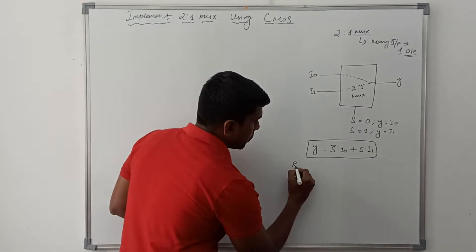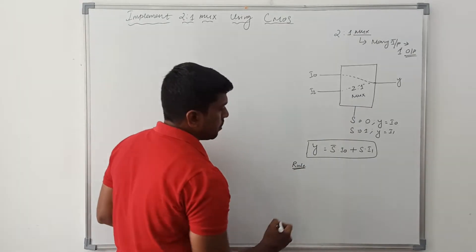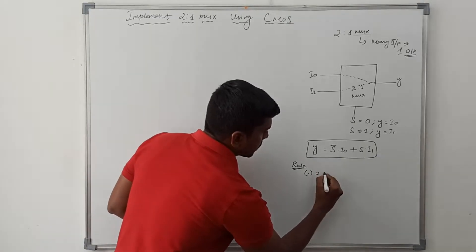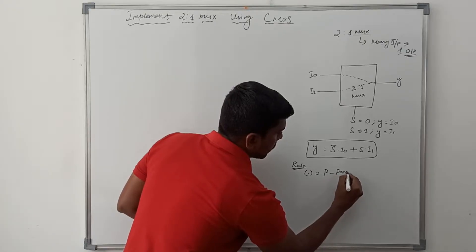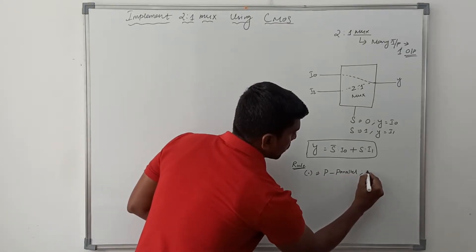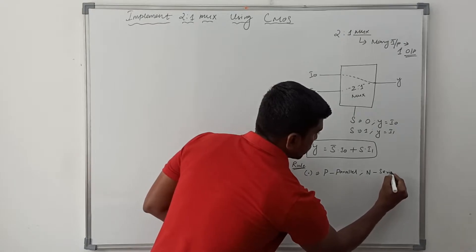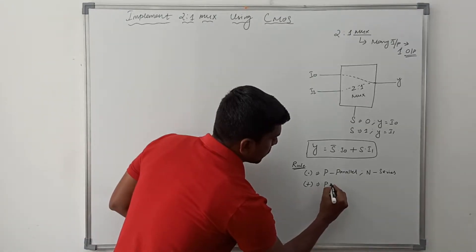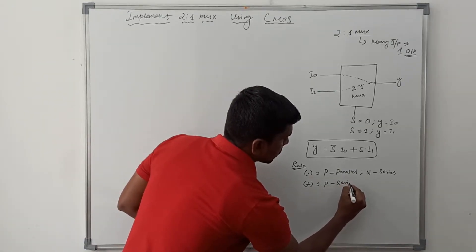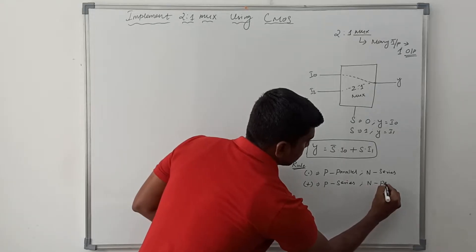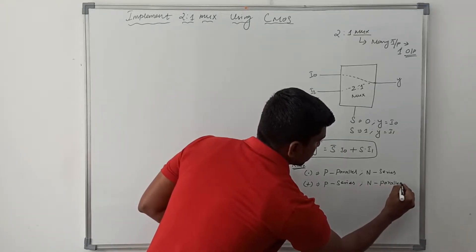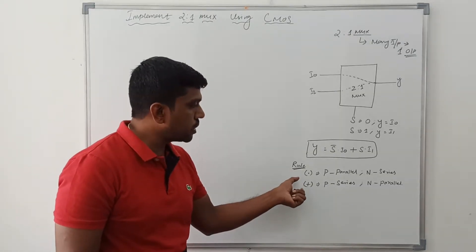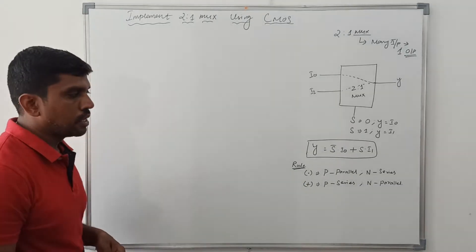Now I recall the rule for CMOS structure. When a dot operator is present in the Boolean expression, PMOS connects in parallel and NMOS connects in series. When a plus operator is present in the Boolean expression, PMOS connects in series and NMOS connects in parallel. This is the basic rule we have discussed many times, and using this rule I am going to draw the CMOS structure.